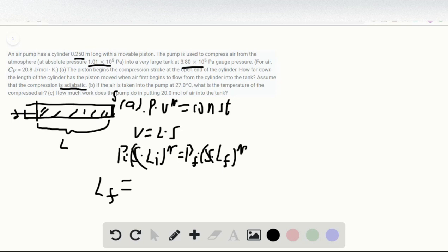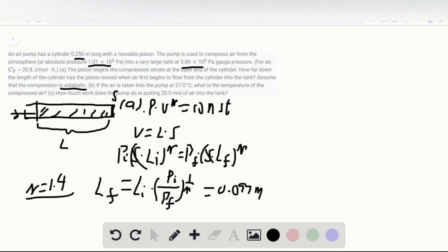LF equal to LI times PI over PF to the power 1 over gamma. For air, gamma equal to 1.4. So we can plug in the numbers, and the solution is 0.097 meters.